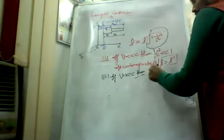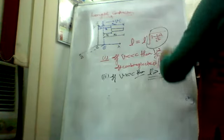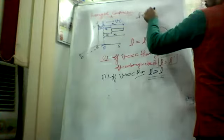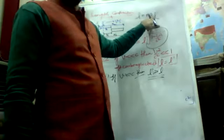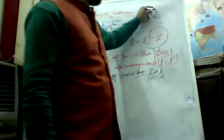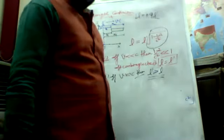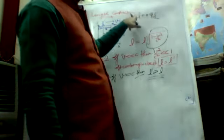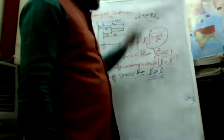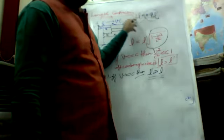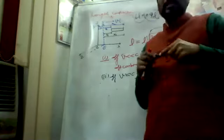So L-dash is greater than L. Suppose this term value is 0.9, then L equals 0.9 L-dash, meaning L is less than L-dash. If it is 0.7, then further reduction. As V approaches C, the factor keeps decreasing, so L becomes smaller and smaller.